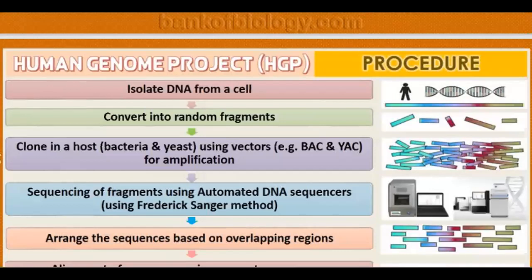How did the Human Genome Project work? First, they isolated the cell and took out the DNA from the cell — whether blood cells, skin cells, hair cells, or any type of cell. The DNA is removed from the nucleus. Both mitochondrial DNA and nuclear DNA come out. Then the DNA was converted into small fragments.